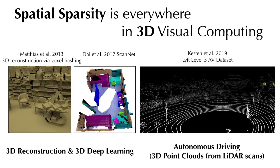In 3D vision tasks, since scanning devices can only collect data from surfaces instead of whole volumes, speeding up 3D reconstruction, deep learning, and autonomous driving tasks needs exploiting spatial sparsity.